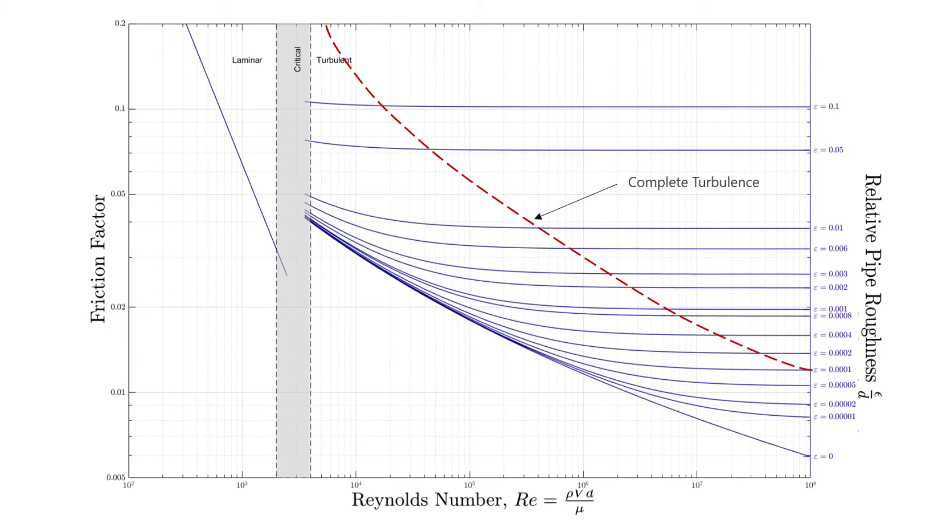Looking at the chart, we can also see that at high Reynolds numbers, the friction factor becomes independent of the Reynolds number. This region is identified by the complete turbulence dashed line. This because in thin laminar layers, the surface roughness dominates the near-wall characteristics.